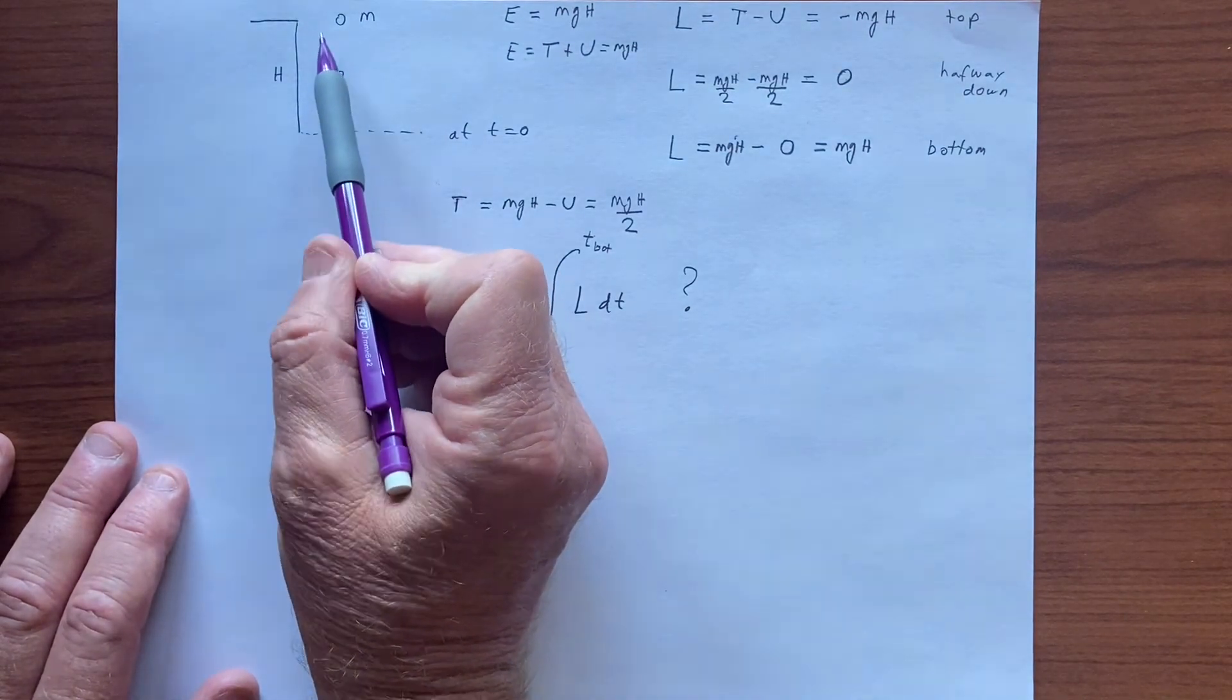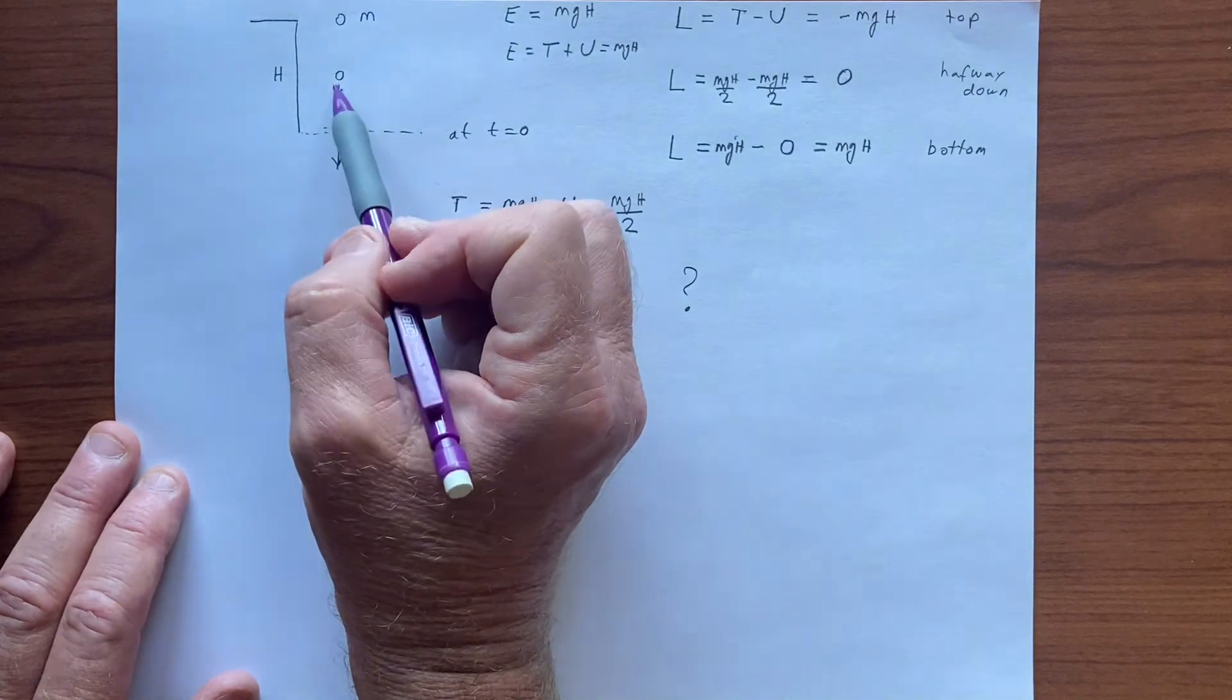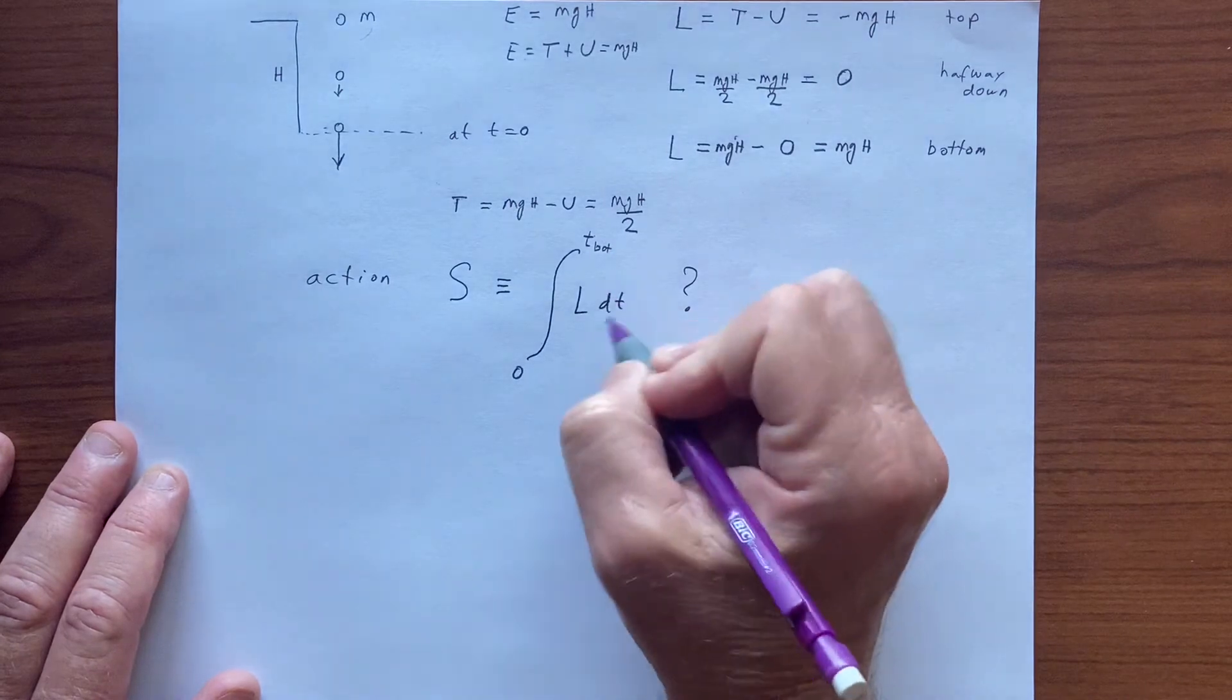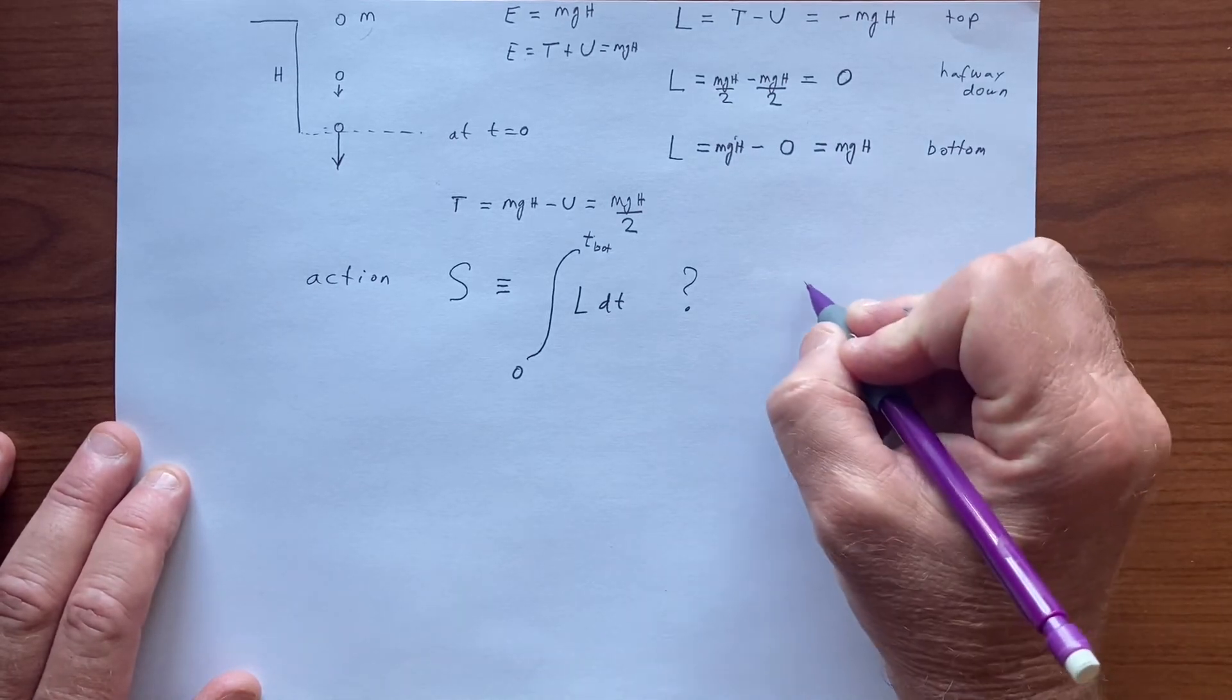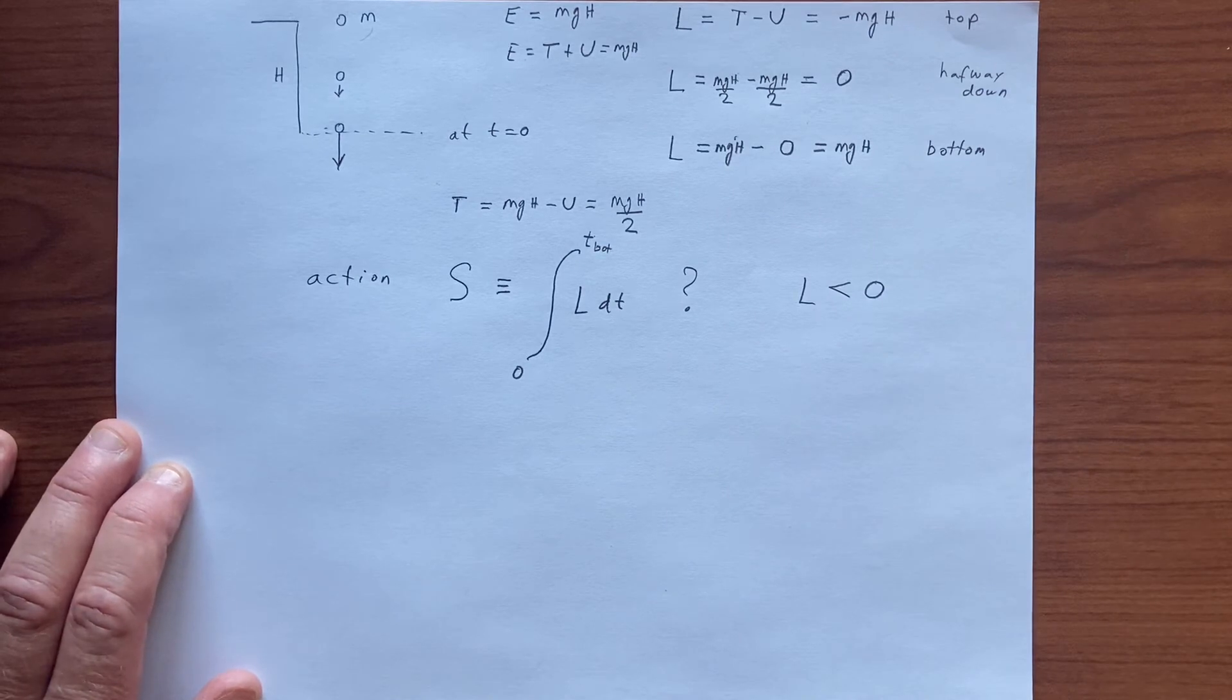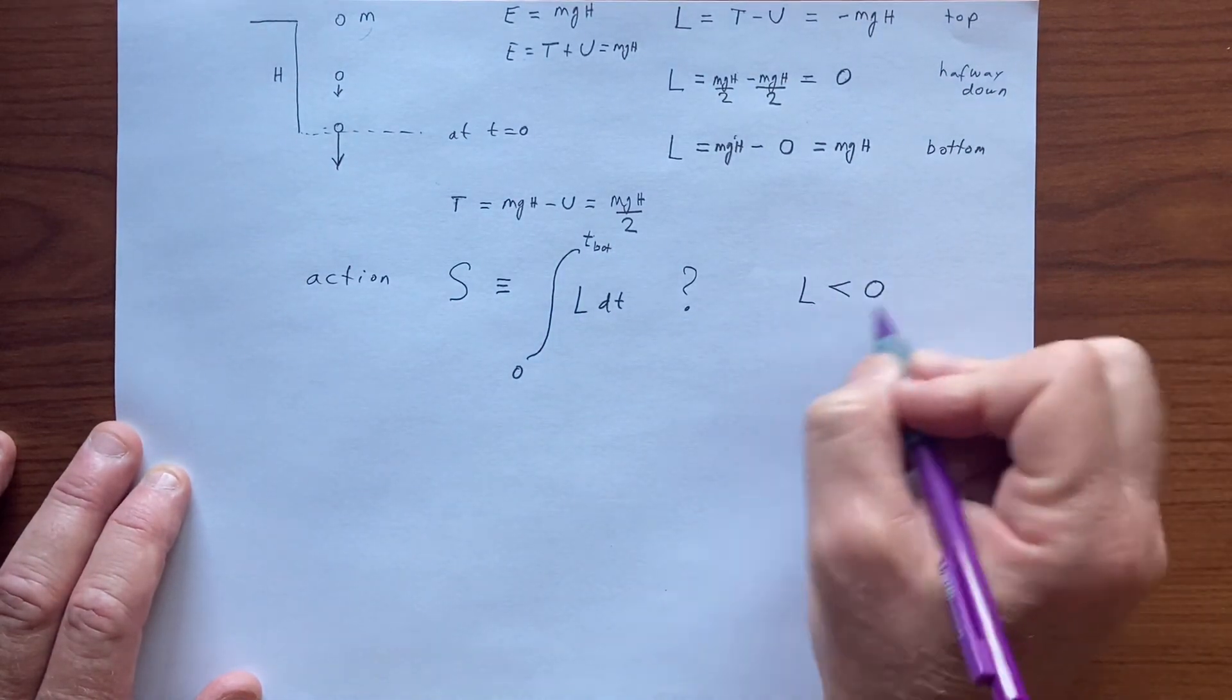Because the object actually lives longer in regions where the potential is larger, where the object is moving slower here, and moving much faster here, so it goes through this region faster than it does through here. And so in a sense we're weighing the negative values more. And so the object lives longer in regions where L is negative, and so we are ultimately arguing that this kind of an object gets minimized.